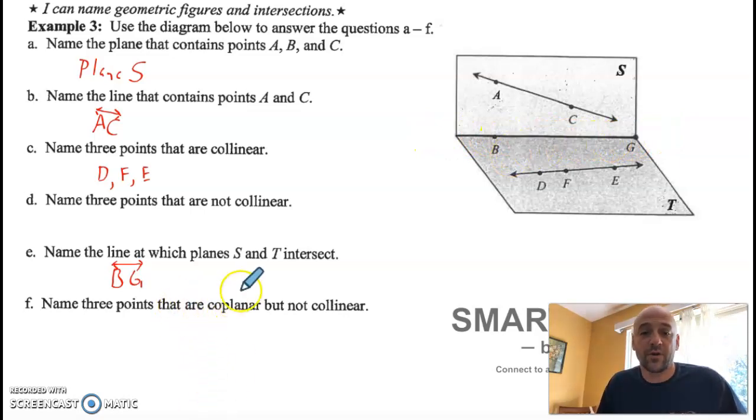Name three points that are coplanar but not collinear. So coplanar means on the same plane. Not collinear means they're not on the same line. So don't choose D, F, and E because they are on the same line. I'm going to go with this top plane. We've got A, C, those are on the same line. That's okay, but we're naming three points. So use A, C, and then either B or G.